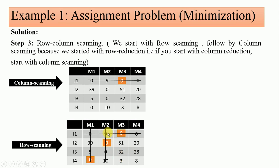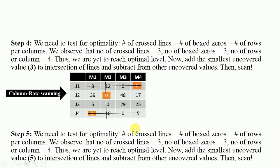Then add the same smallest uncovered value, which is 3, to the points of intersection of lines. At j1-m1 there is zero at that spot where the lines cross, so it becomes zero plus three. At j1-m2, where the lines cross, the value is nine, so it becomes nine plus three. The resulting table is what you are going to see next, and that is what you can see here.